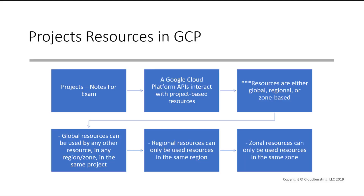For the exam, understand that a Google Cloud Platform API is going to interact with project-based resources. Also important to realize is that resources are going to be global, regional, or zonal-based. That's important for understanding the types of resources being used. For example, if a virtual machine image is not attached to a local SSD, we could move that image somewhere else — but if it's attached to a local resource, it can't just be moved around.